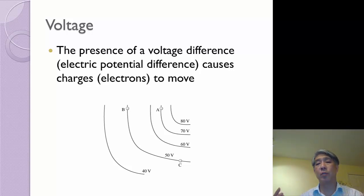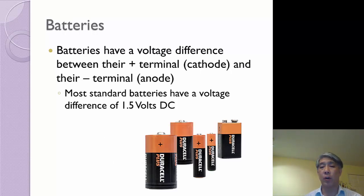And that movement of charges, or the movement of electrons, is what we are going to call current. And to generate that, we have batteries.